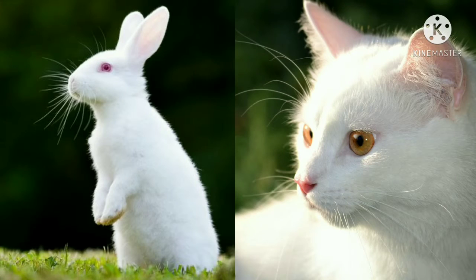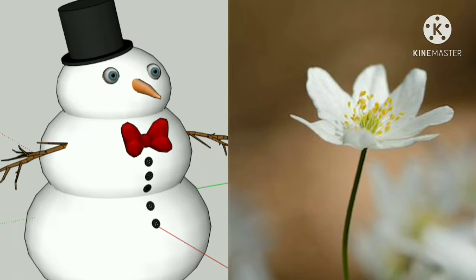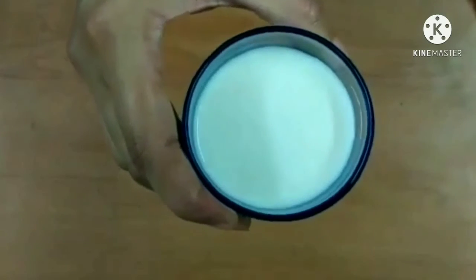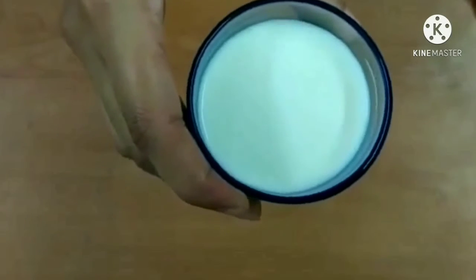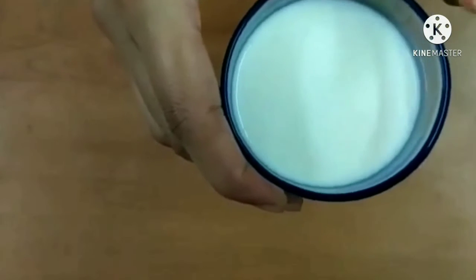Now I am showing some pictures and objects that are white in color. Milk. Milk is white color.